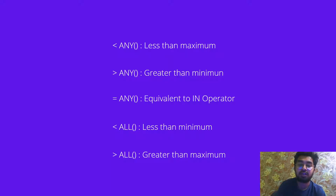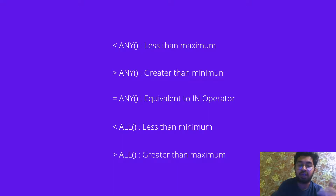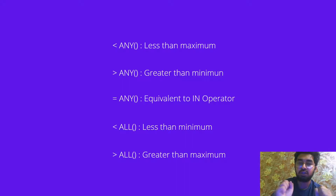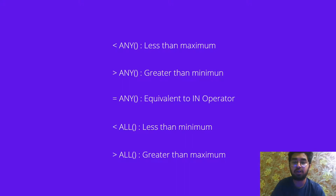After that, we have the ALL operator with two different situations: greater than and less than. In the less than situation, it will be the value less than the minimum, and in the greater than situation, the value would be greater than the maximum. I know you won't be getting this right now, but it will be clear in the code, so let's just go to the code without wasting time.